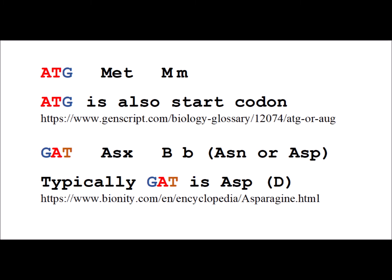As we mentioned before, the GAT codon is ASX, so that's either asparagine or aspartic acid, just to give us the symbol, the letter B.